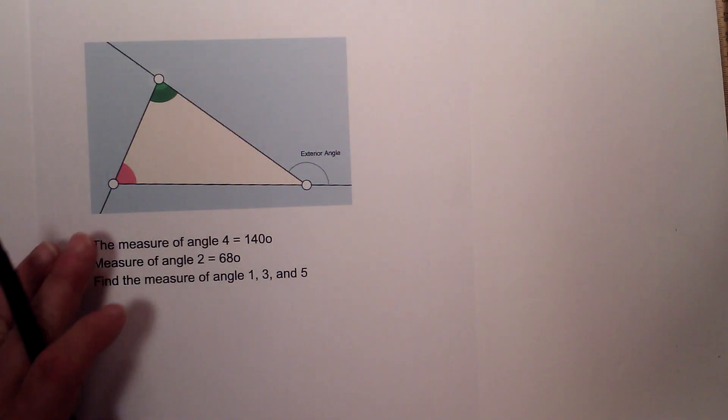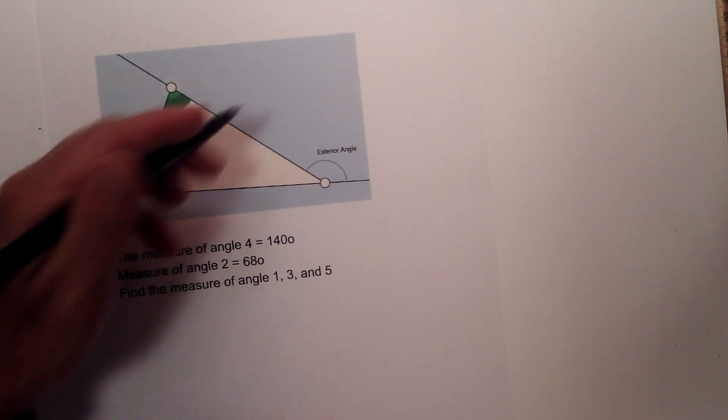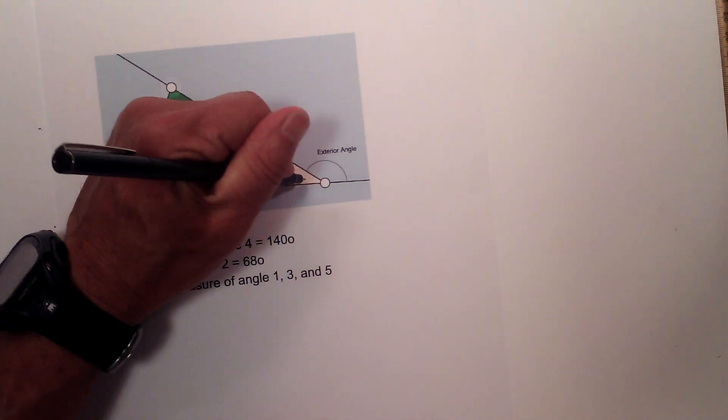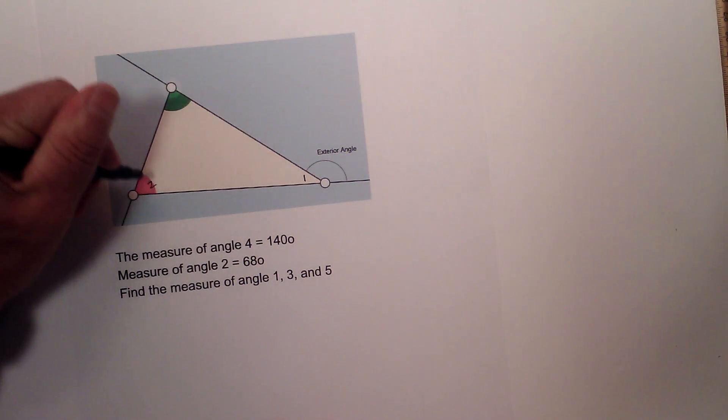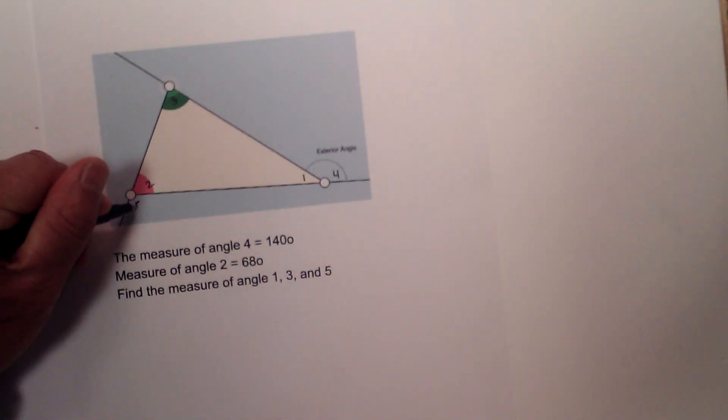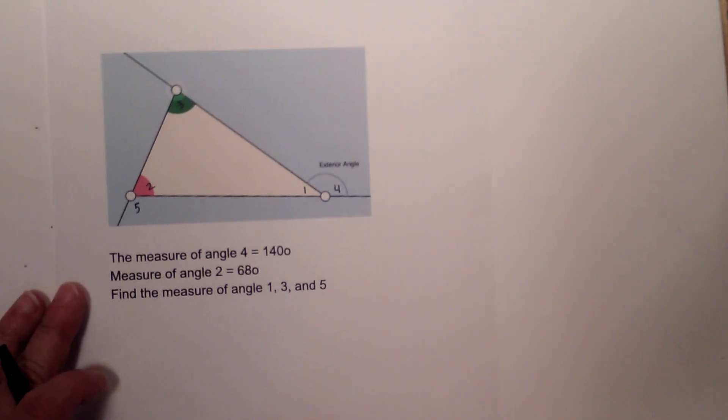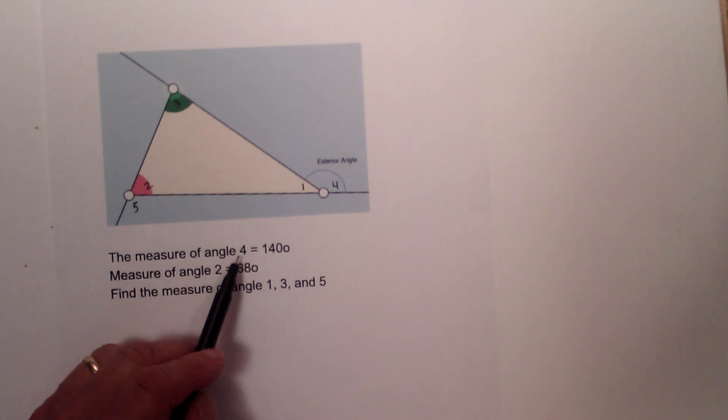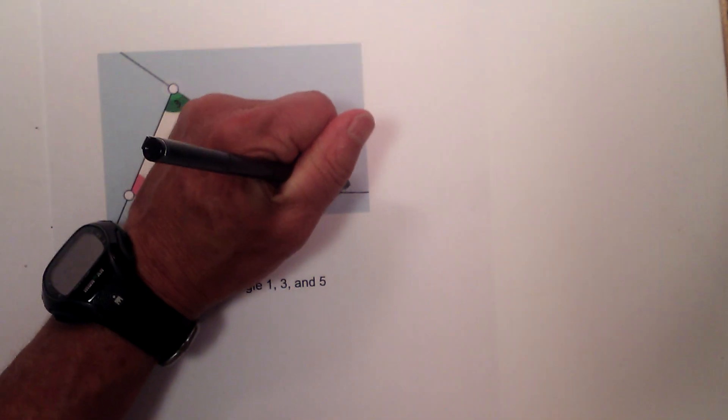Now let's look at one more. Let's go ahead and number these. This is 1, this is 2, this is angle 3, this is angle 4, and this is 5. So we have them numbered.